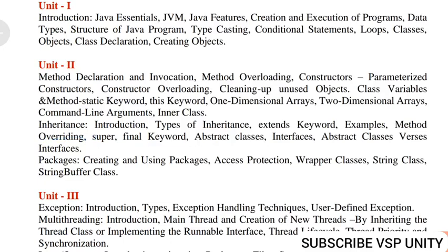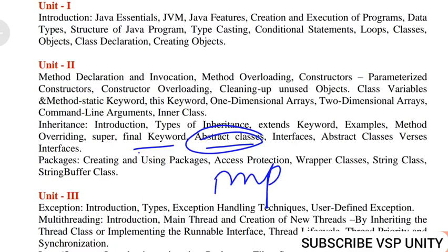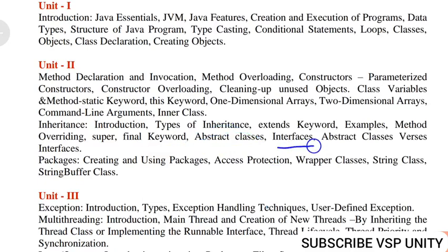For short questions, abstract class and final keyword are important — abstract class is asked every time. They will ask: what is abstract class and what is the difference between abstract class and a normal class. One more long answer is interface. Interface is a new concept in OOP. From interface onwards, the complete programming approach changes, overcoming the drawbacks of C++ with new concepts present in Java. Definitions will be asked in short questions and concepts in long questions.